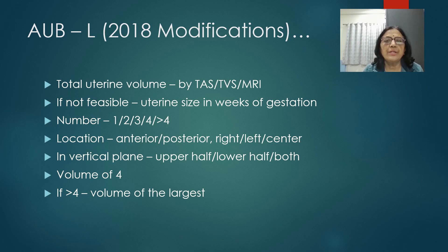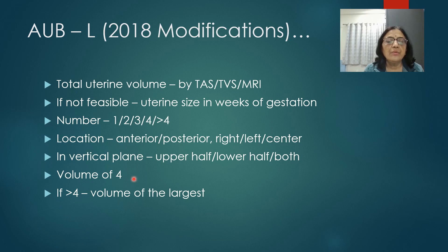Further 2018 modifications: when leiomyoma is present, total uterine volume must be mentioned — by transabdominal sonography, transvaginal sonography, or MRI; if unavailable, uterine size in weeks of gestation should be noted. The number of leiomyomas (1, 2, 3, or 4 or more) must be stated. Location — anterior/posterior, right/left/centre, and upper/lower half — must be noted. Volume of each leiomyoma (up to 4) should be mentioned; if more than 4, the largest one's volume is required.